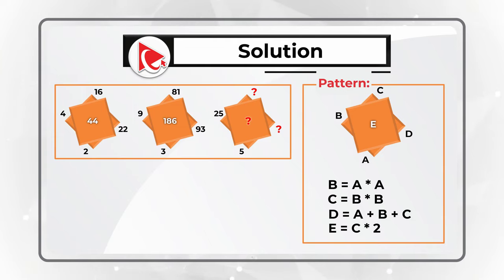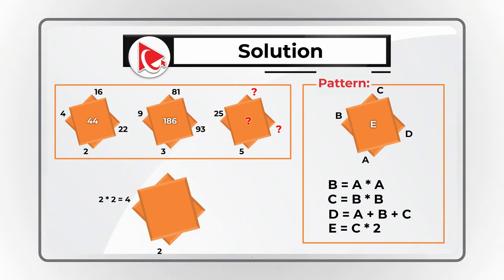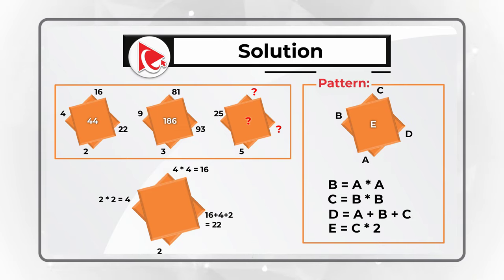For example, in the first diamond set: A is 2. B equals 2 times 2, which is 4. C equals 4 times 4, which is 16. D equals 16 plus 4 plus 2, which is 22. And E equals 22 times 2, which equals 44.